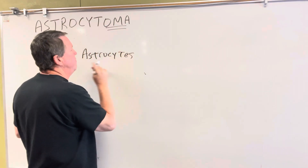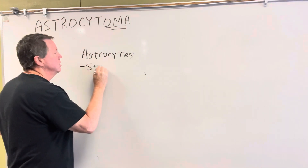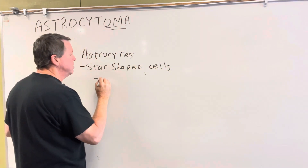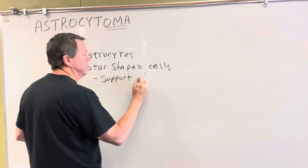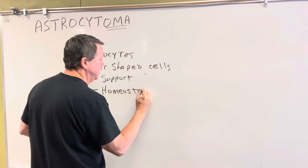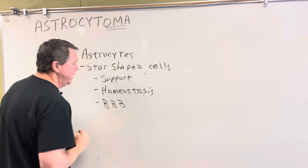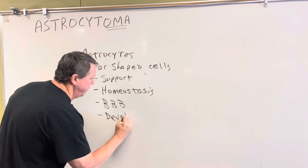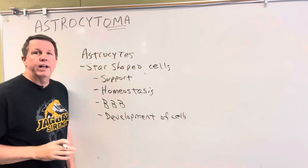So what are astrocytes? I'm going to make another video all about astrocytes, so this is a quick preview. What astrocytes are is star-shaped cells, and what they do is provide support to the neurons in the nervous system. They help maintain homeostasis, especially with ions. They play a role in the blood-brain barrier, and they are also responsible for the development of nerve cells in the nervous system.